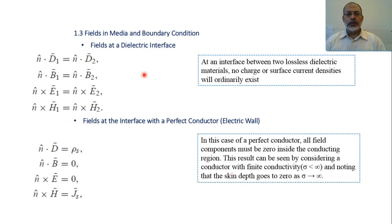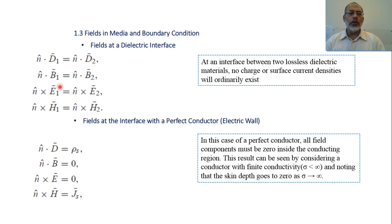As a special case, if we have two dielectric media, there is no surface current density and no surface charge density. The boundary conditions become: the normal component of D in medium 1 equals that in medium 2; the normal component of B in medium 1 equals that in medium 2; the tangential electric field in medium 1 equals that in medium 2; and the tangential magnetic field in medium 1 equals that in medium 2, all at the interface between the two dielectric media.